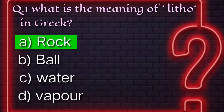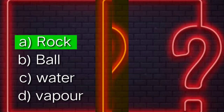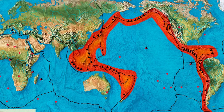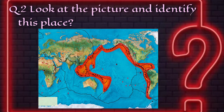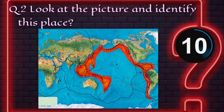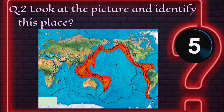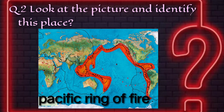Question number two: Look at the picture and identify this place. Answer: This is the Pacific Ring of Fire.